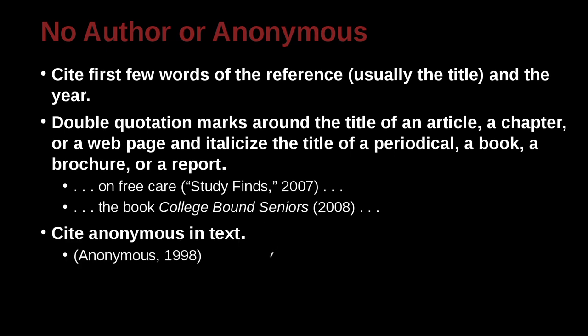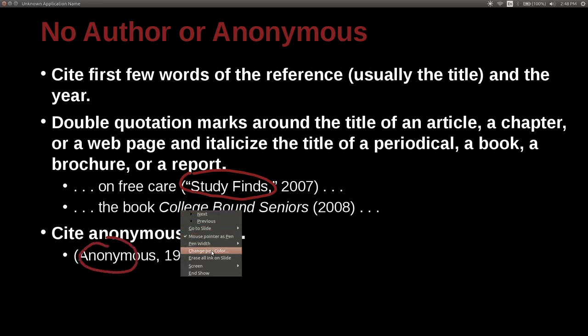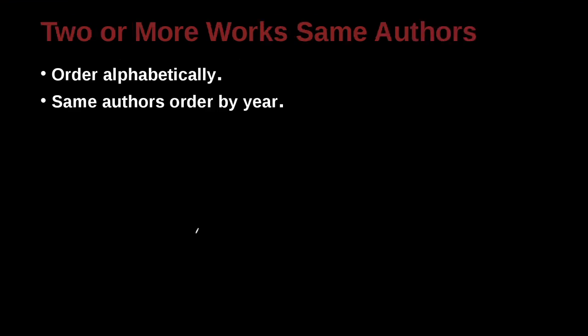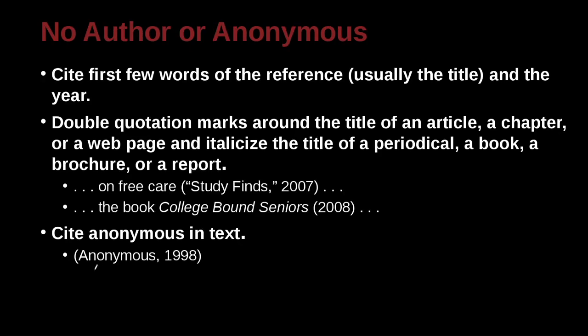If you're writing your citations and you want to cite inside the text, you can also just use the word anonymous. So you can use this way, which is the first few words, or you can use this way, which is anonymous. Just say it's anonymous. And again, when you do it that way, you're going to do it the exact same way as before as far as the name goes.